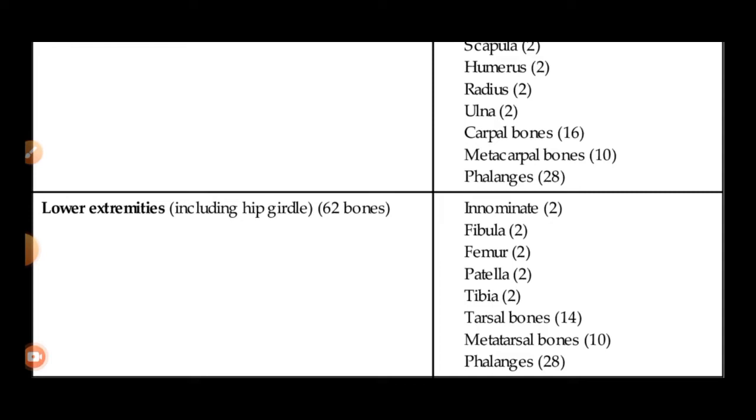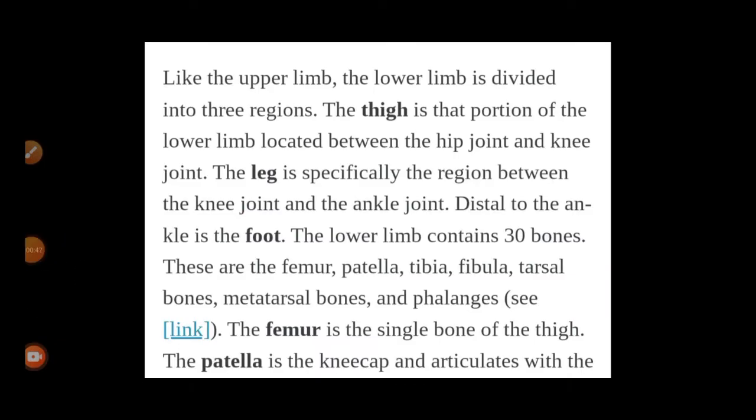Then we have metatarsals and phalanges, just like the upper limb. The lower limb is divided into three regions, similar to the upper limb. There are joints involved — in the upper limb we call it the pectoral girdle and shoulder joint.